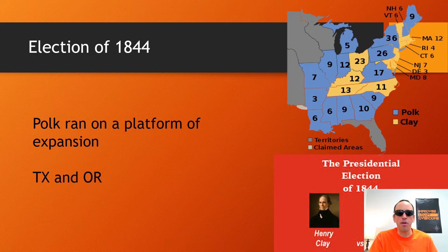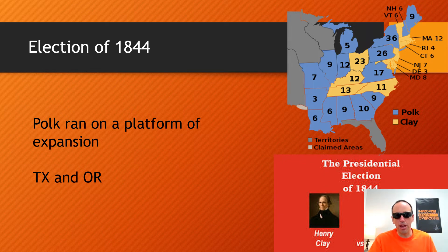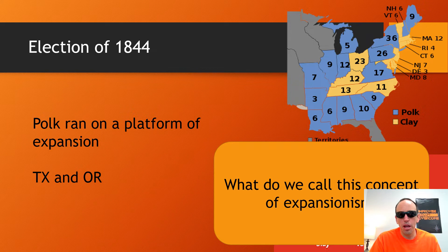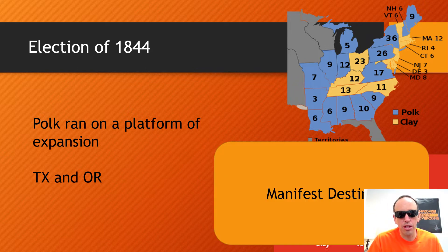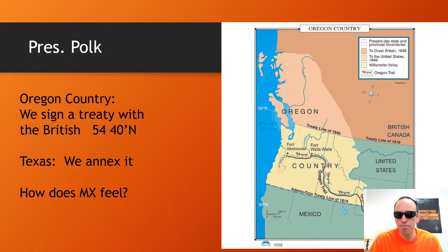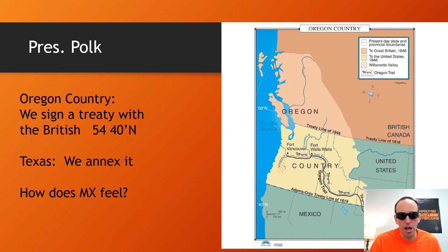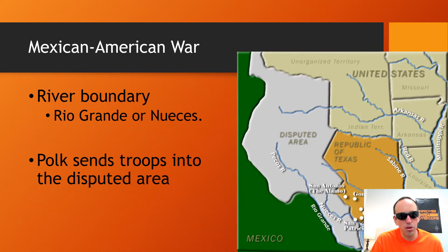Polk ran on a platform of adding both Texas and Oregon, which would balance everything out. What's it called when we want to head west? Manifest Destiny. So we make a treaty with England — they take north of the line, we take south — and we annex Texas. How does Mexico feel? They don't feel good.